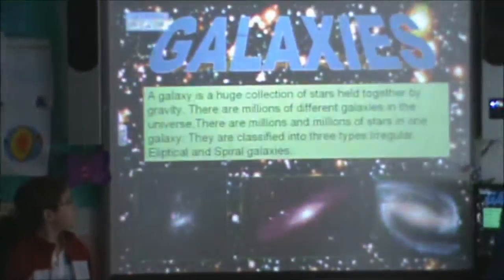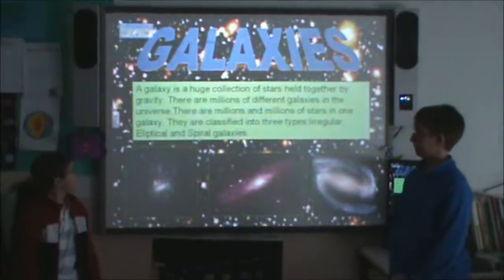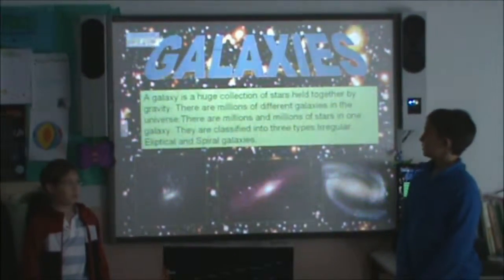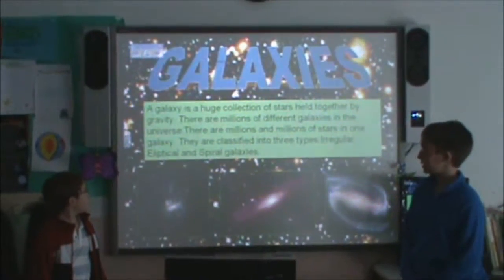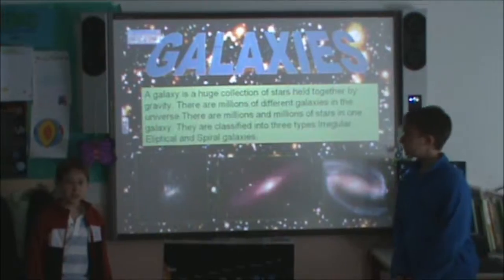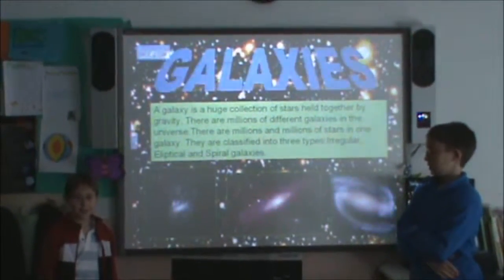A galaxy is a huge collection of stars held together by gravity. There are millions of different galaxies in the Universe, and millions of stars in each galaxy. They are classified into three types: irregular, elliptical, and spiral galaxies.